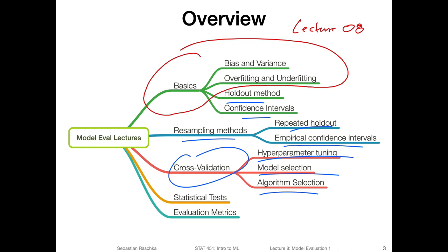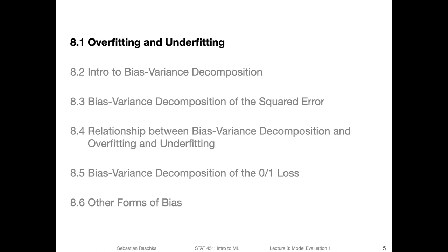After that, we will talk about some statistical tests that we can use for comparing models and algorithms, and we will also talk about evaluation metrics — for example, the receiver operating characteristic area under the curve and others. Now let's get started with this lecture: the introduction to overfitting and underfitting. I structured lecture eight into six subtopics. They will be way shorter than usual because this is a relatively short lecture, especially compared to the ensemble methods lecture, which was ridiculously long. But I thought ensemble methods were quite important in practice, so I wanted to give them focus because you will likely encounter them at some point.